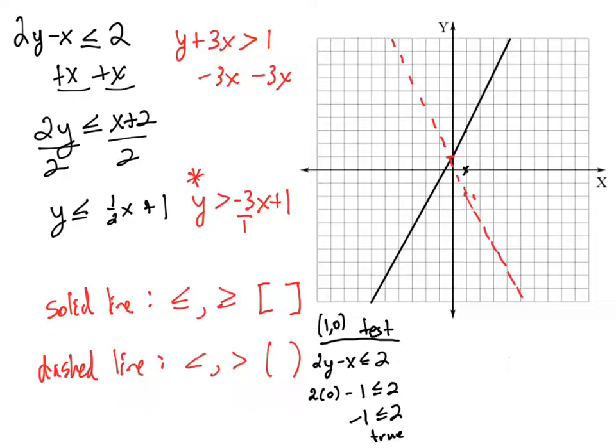So what that means is, this inequality is, let's label things here. This is the first inequality, second inequality. So this line corresponds to that first inequality. And what we're saying is that test point makes that inequality true. So what this means is, we're going to shade on the same side as where that test point is. Because that point, 1, 0, is kind of on the right side of that line. And because it makes it true, we're going to shade everywhere on the right side of that line. In other words, any point that we picked on the right side of that line would make this inequality true.